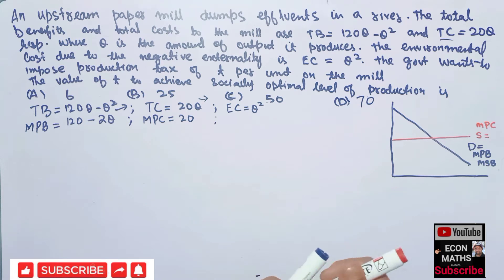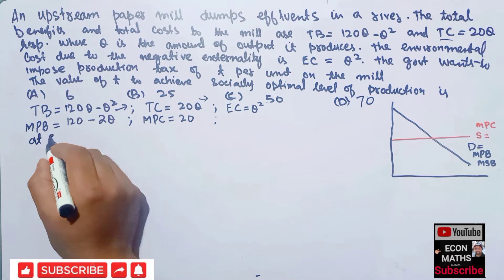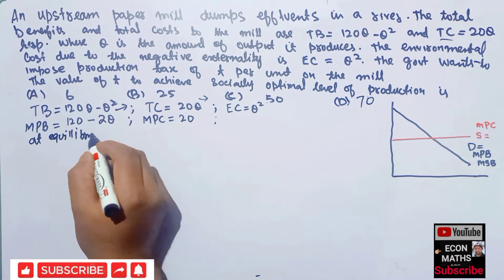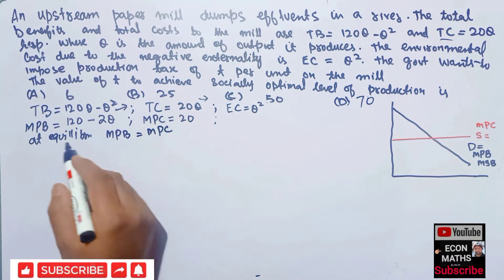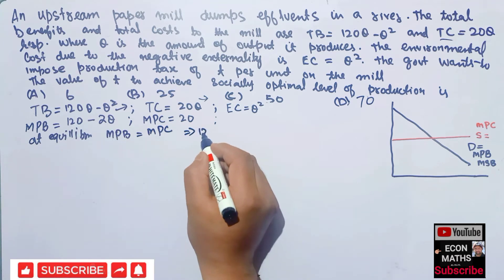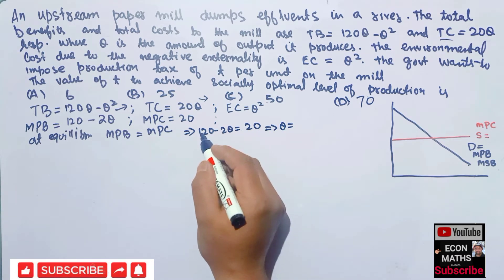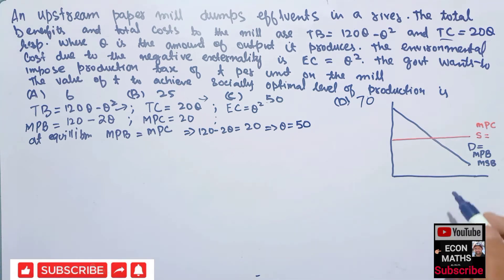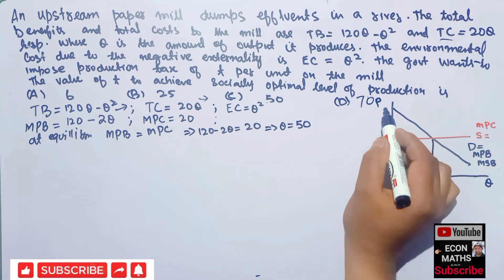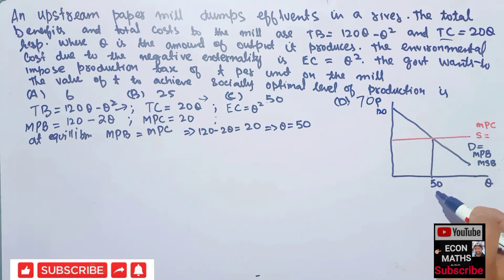First of all, we will see the intersection of these two curves, which gives us the optimal output. At equilibrium, marginal private benefit equals marginal private cost. So: 120 minus 2q equals 20, which implies 2q equals 100, so q equals 50. Our equilibrium output at the private competitive level comes out to be 50. On the graph, the quantity axis shows 50 units, and the price axis shows the intercept of 120.